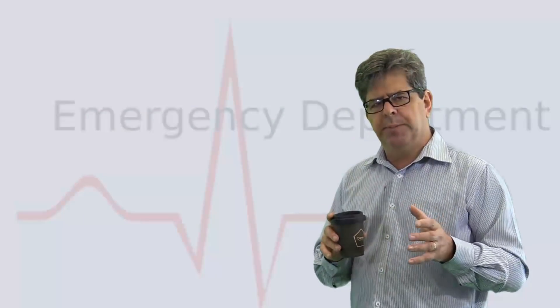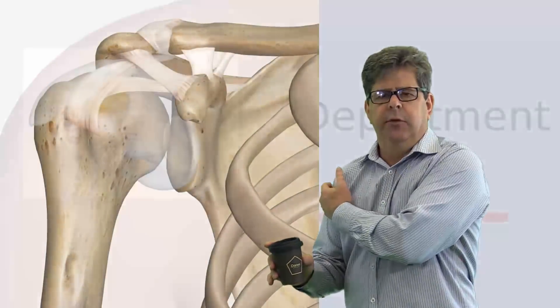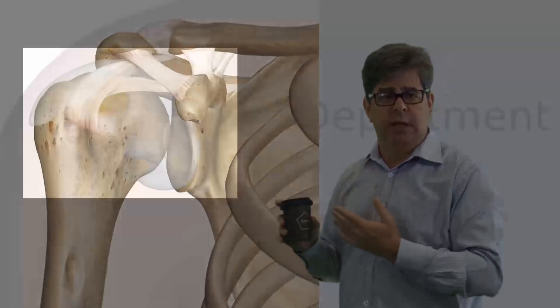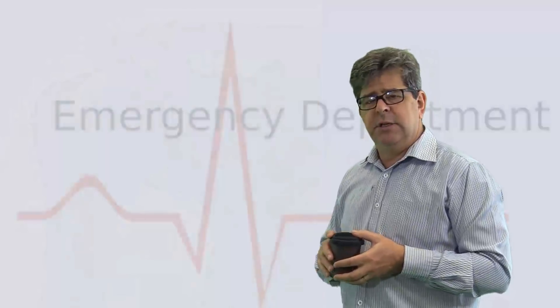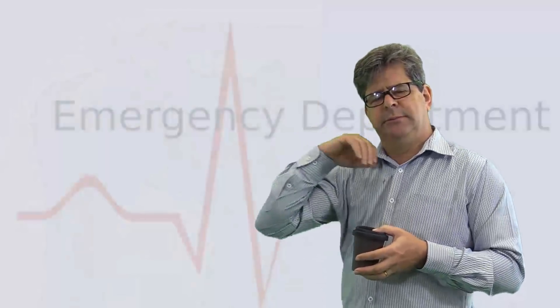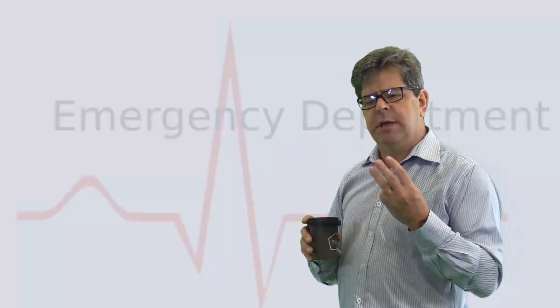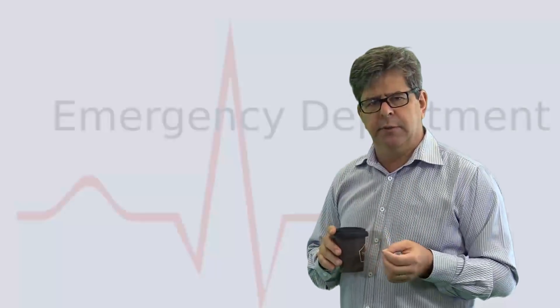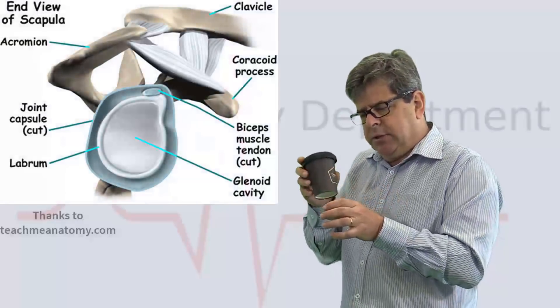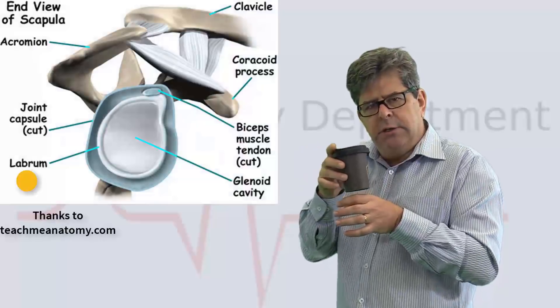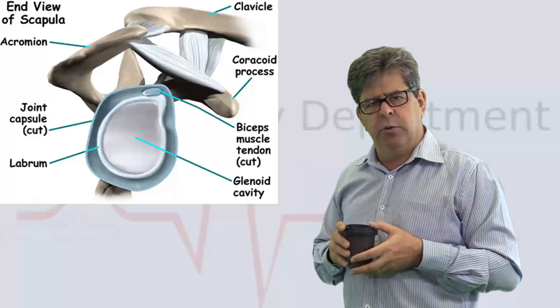So let's do some relevant anatomy. The shoulder joint we're talking about is between the head of the humerus and the glenoid of the scapula. It's got quite a loose capsule and it's actually the most mobile joint in your body. There are three areas that are important for the stability of the shoulder joint. The first is that the glenoid has around it a fibrocartilage labrum or rim, and this actually deepens the socket for the humeral head.